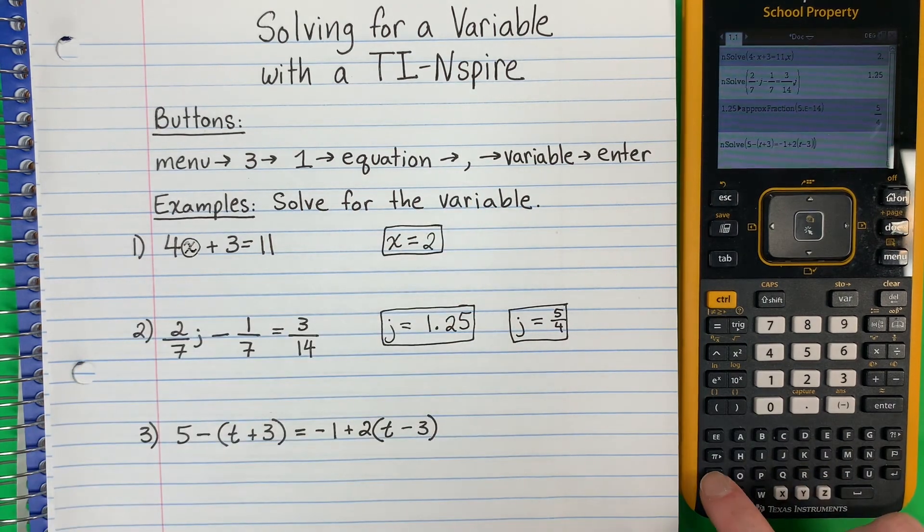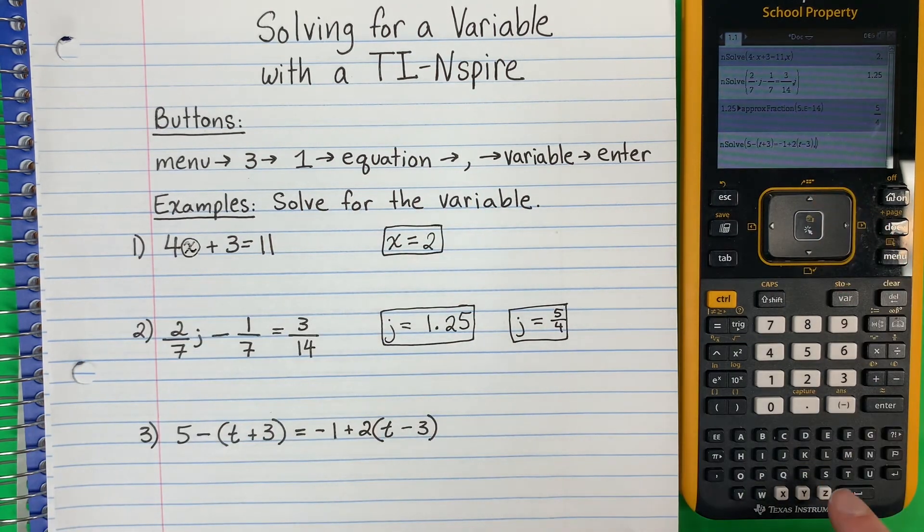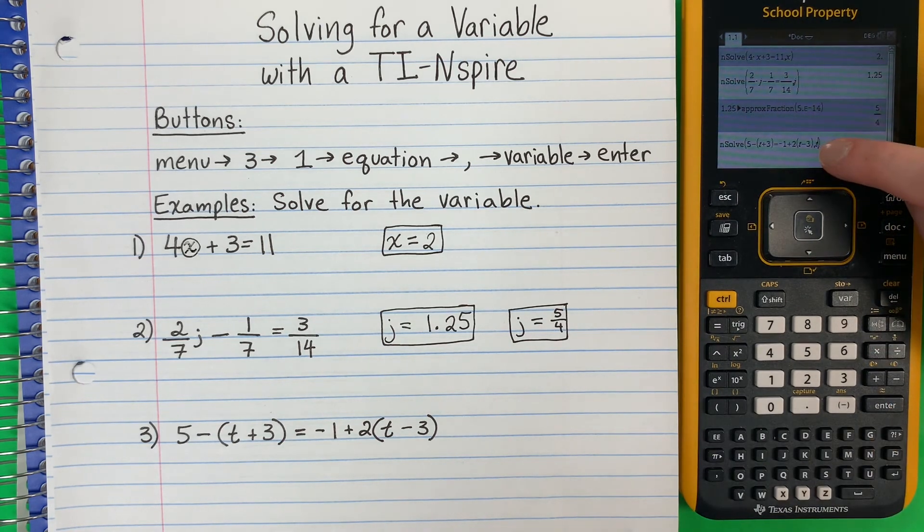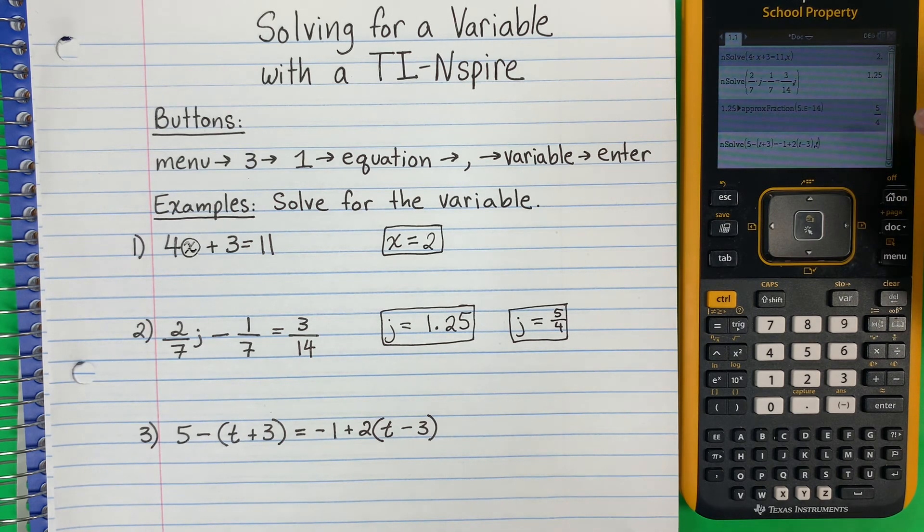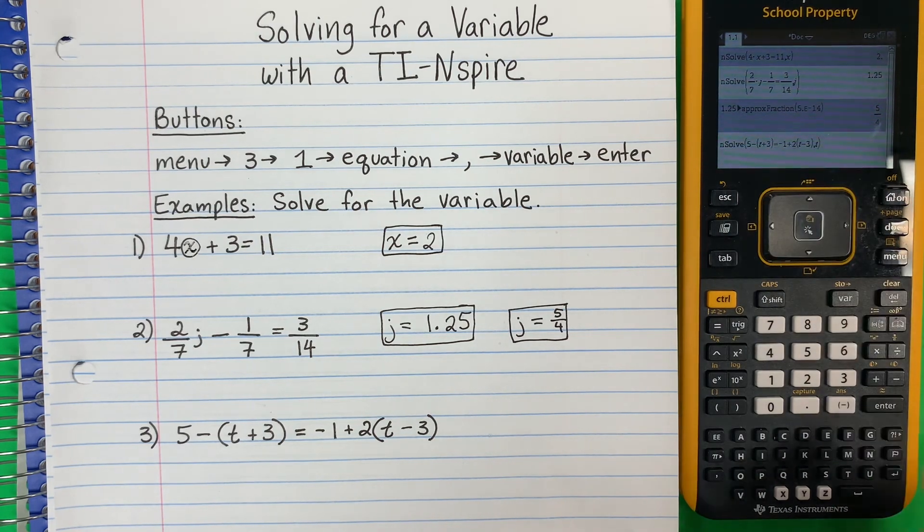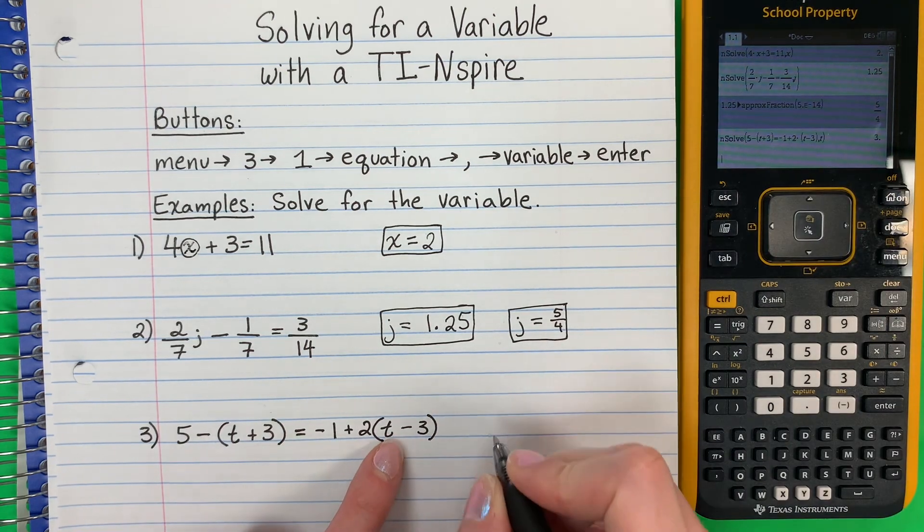Now put your comma and the letter. Y la letra T. Guys, it should be comma, letter, parenthesis. Necesito que es coma, letra, parenthesis. If it's not like that, it's not going to work. Si no es así, no va a funcionar. So comma, letter, parenthesis. Enter. And I get 3. So this is the letter T. Es la letra T.